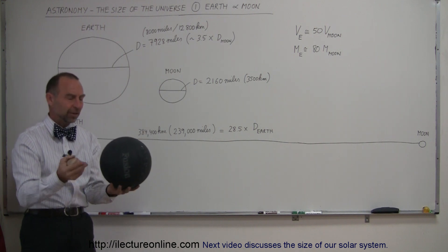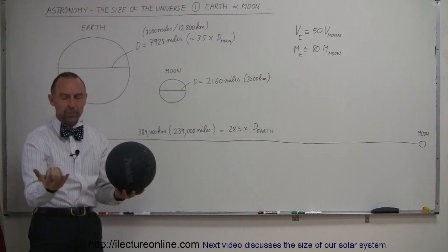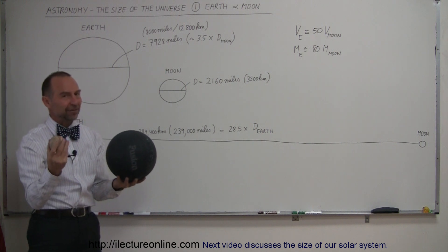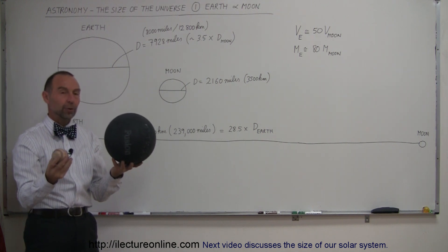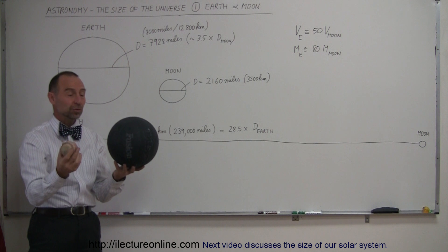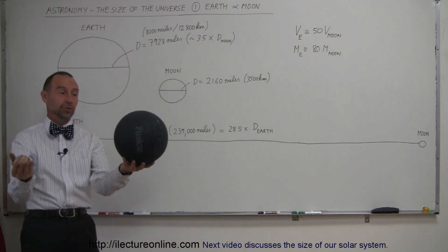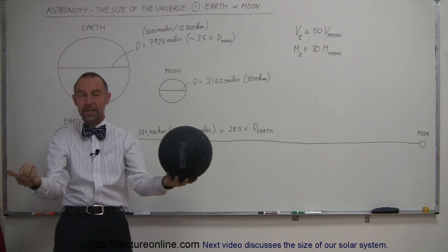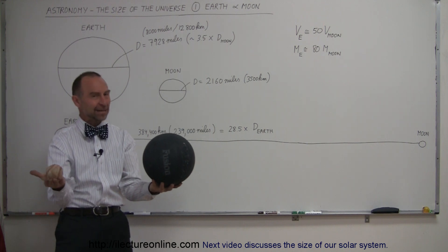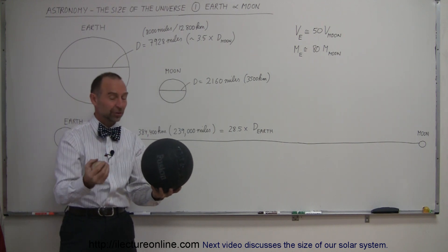And mass-wise, because the Earth is more dense than the Moon, the Earth has a lot of metal at the center, the Moon doesn't have a lot of metal at the center. Weight-wise, if you were to put the Earth on a scale, how many moons would you need on the other side to balance them out? You would need about 80 moons to balance out one single Earth.